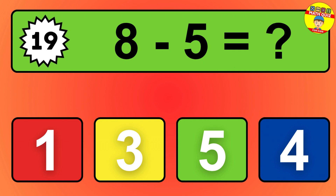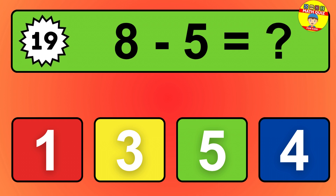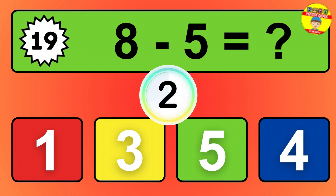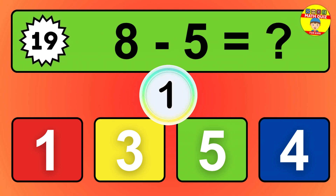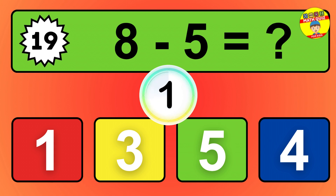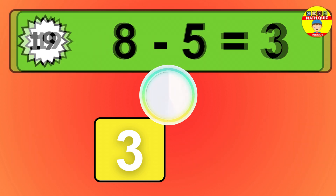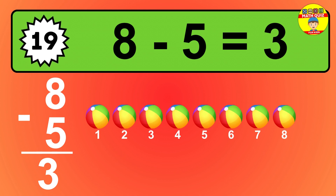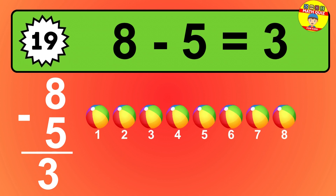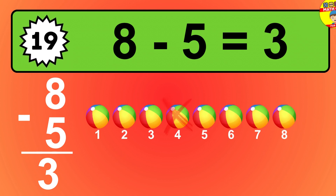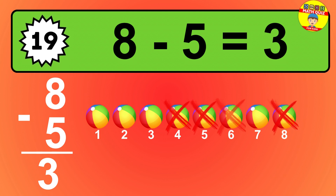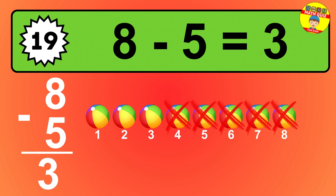Question 19. 8 minus 5 equals what? So the answer is 8 minus 5 is 3. Let's count it. 1, 2, 3.